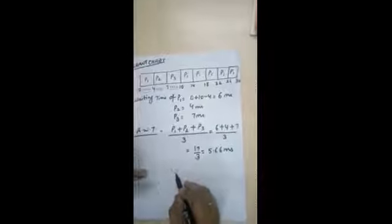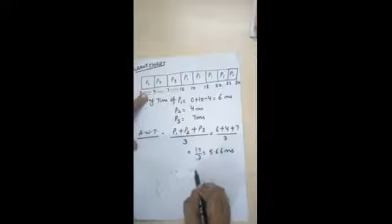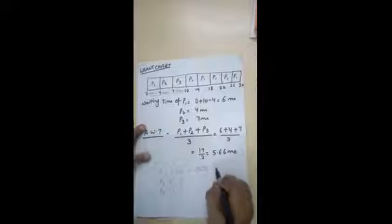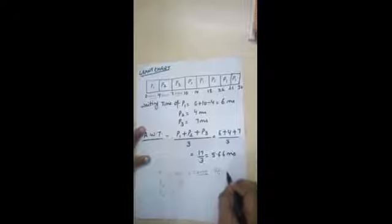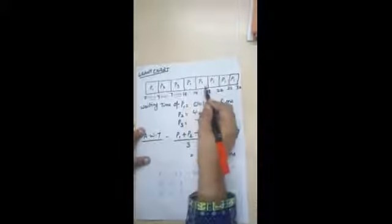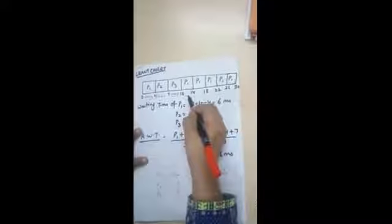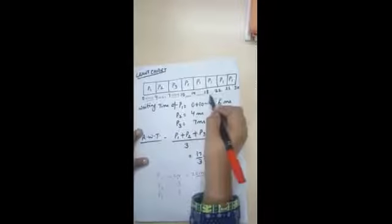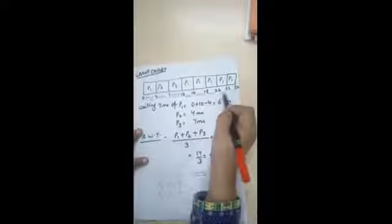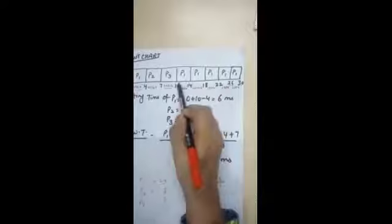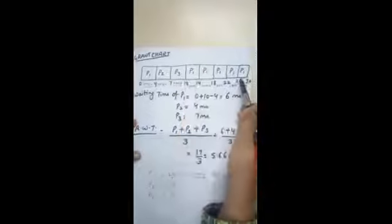P1's burst time is 24 but we only allocated 4 milliseconds, so 20 milliseconds remain. With a time quantum of 4, 20 divided by 4 equals 5 — P1 needs to be divided and allocated 5 more times. So: 10+4=14, 14+4=18, 18+4=22, 22+4=26, 26+4=30. This way P1 is fully allocated across 5 additional time slices.